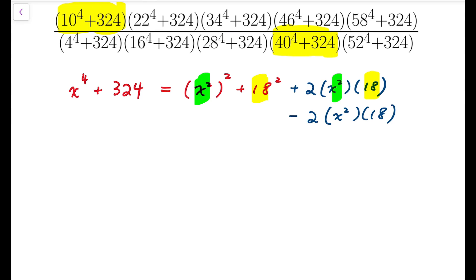Now, from this, I'm going to group the first three terms and rewrite that as x squared plus 18 all squared. And the term that's left out is actually 36x squared, and that is 6x all squared. So that means I've managed to rewrite x to the 4 plus 324 into difference of squares.